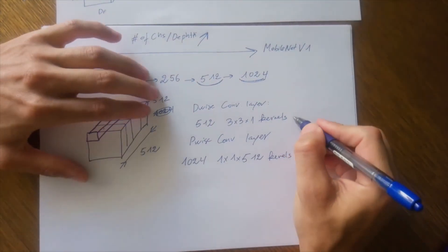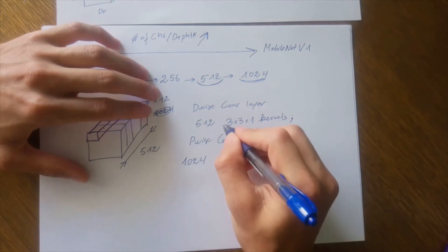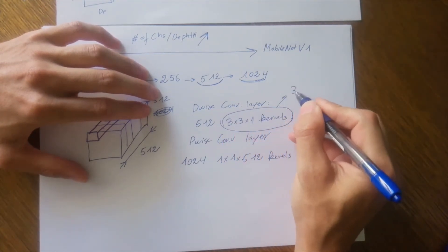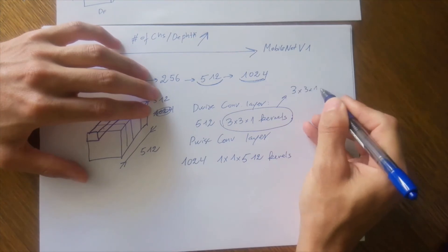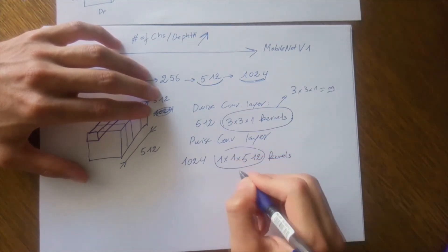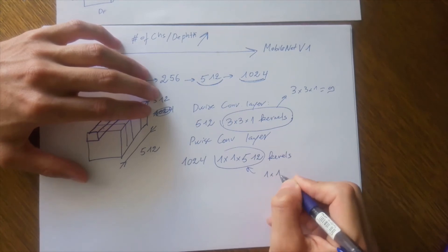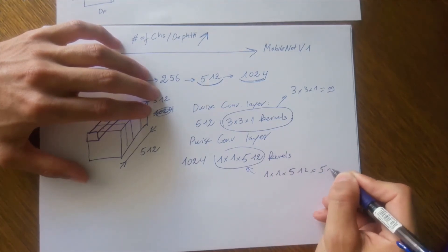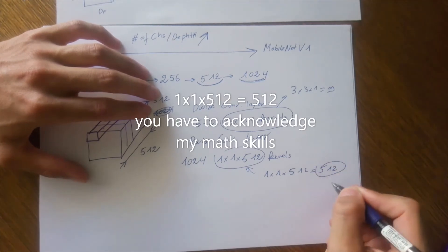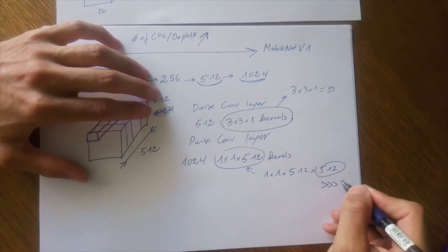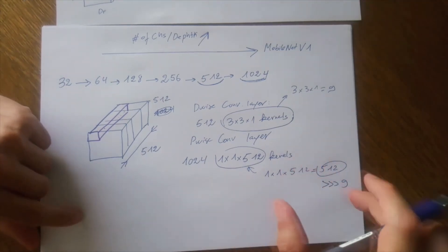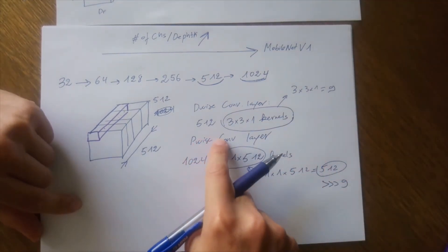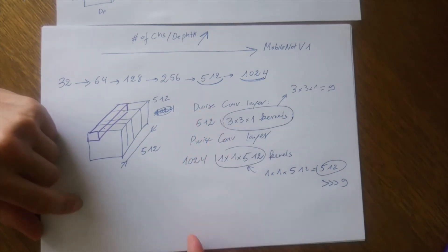So what does this mean? What is the number of parameters per kernel? The number of parameters per kernel is always three times three times one, which is just nine. Whereas in this case, the number of parameters per kernel is one times one times 512, which is just 512. So you can see that 512 is much higher than nine, and this is the reason why most of the computations are required by pointwise convolution rather than depthwise convolution.